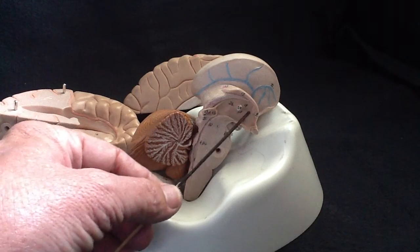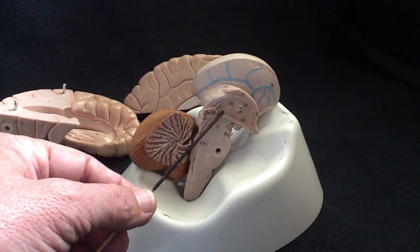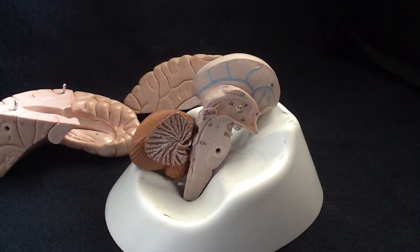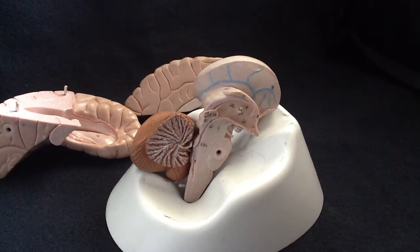This is the third ventricle of the brain. So don't be fooled in a sagittal section when you look for the diencephalon. It's a lot more than it looks.